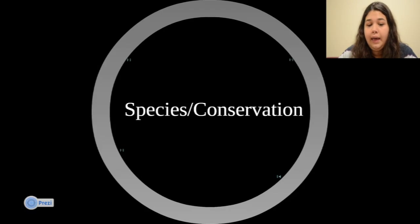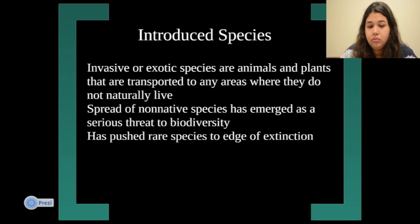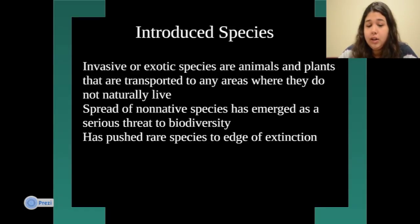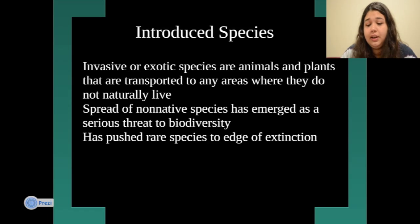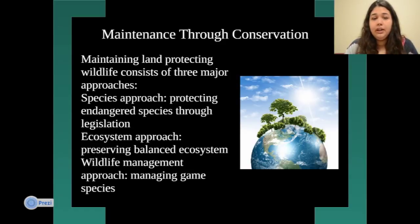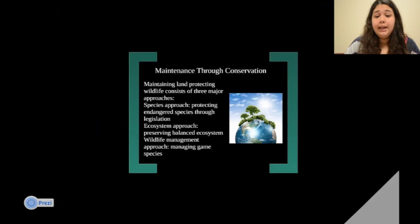The last section is species and conservation. There are introduced species — invasive or exotic species that are animals and plants transported to areas where they do not naturally live. These spread as non-native species and have emerged as a serious threat to biodiversity, pushing rare species to the edge of extinction. There are also different maintenance and conservation strategies.